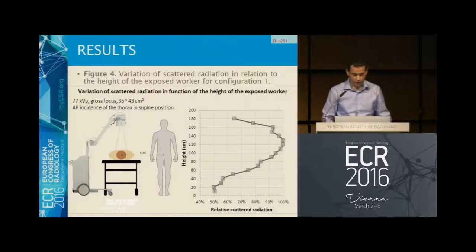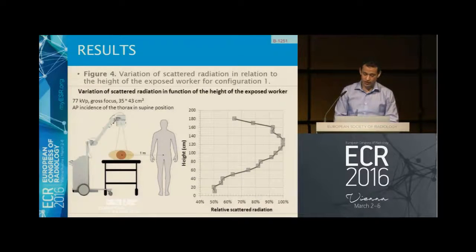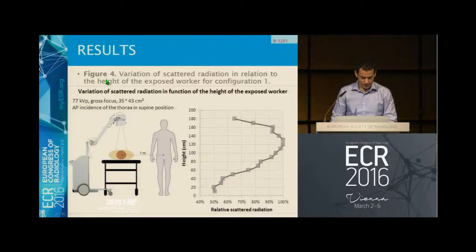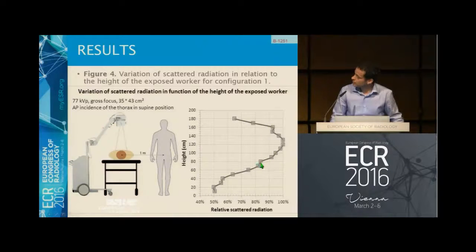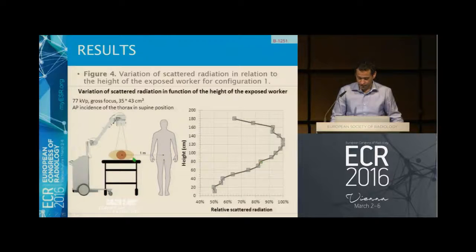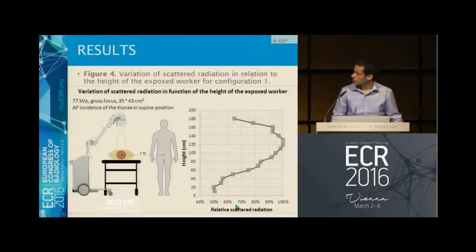In figure four, we also show the variation of scattered radiation in relation to the height of the exposed worker for configuration one, with an example at a distance of one meter. As expected, beneath the table the dose decreases very much. This has to do with the bed that the patient is in, and also the bars and some metal structures found in some beds. Most of the scattered radiation goes upward in the direction of the head, the chest, and the eyes.